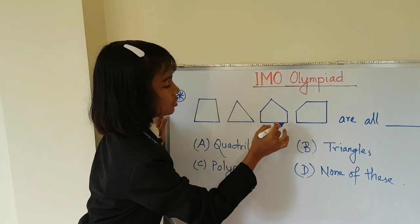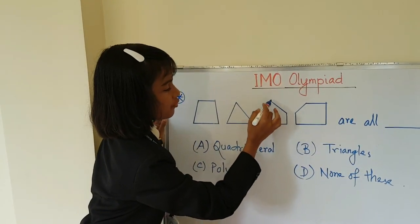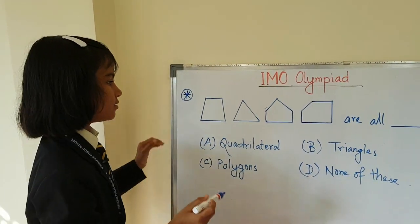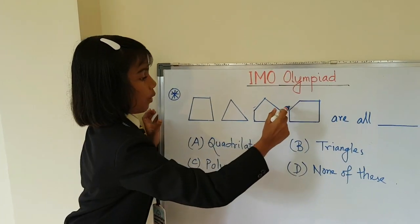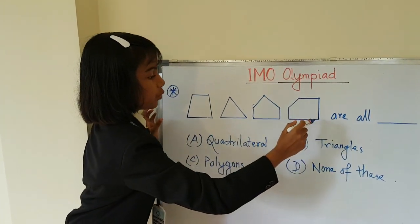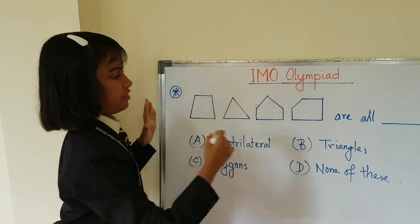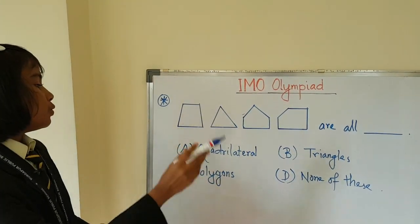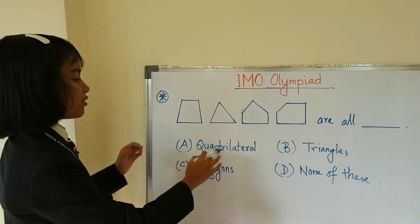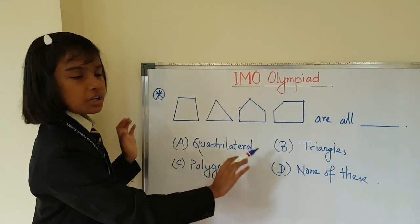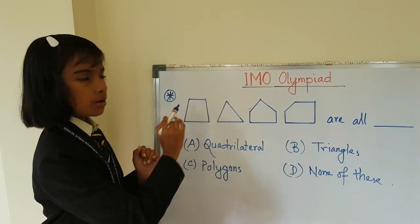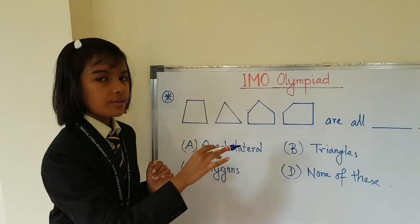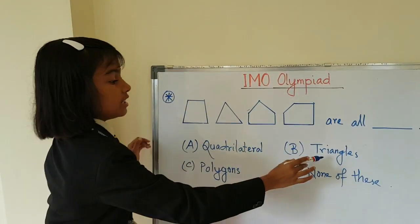One, two, three, four, five — this is a pentagon. One, two, three, four, five — this is also a pentagon. So this will not be quadrilateral, because there is only one quadrilateral here; these are not quadrilaterals.